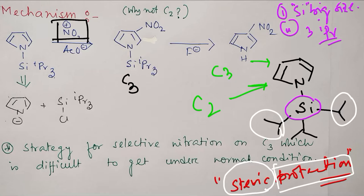Point number two: three IPR groups. These are three big groups such that these C2 positions are not accessible. The nucleophile cannot attack this position.